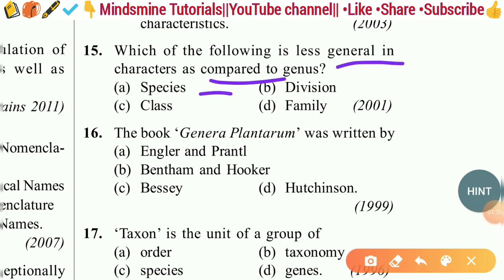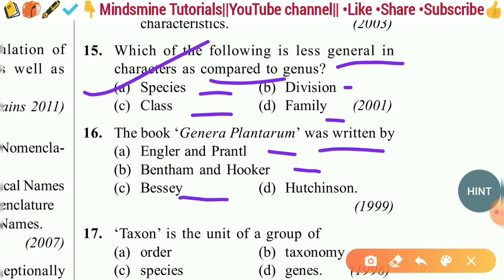Question fifteen: Which of the following is less general in characters as compared to genus — species, class, division, or family? The correct answer is option A — species — because species is less general as compared to genus.